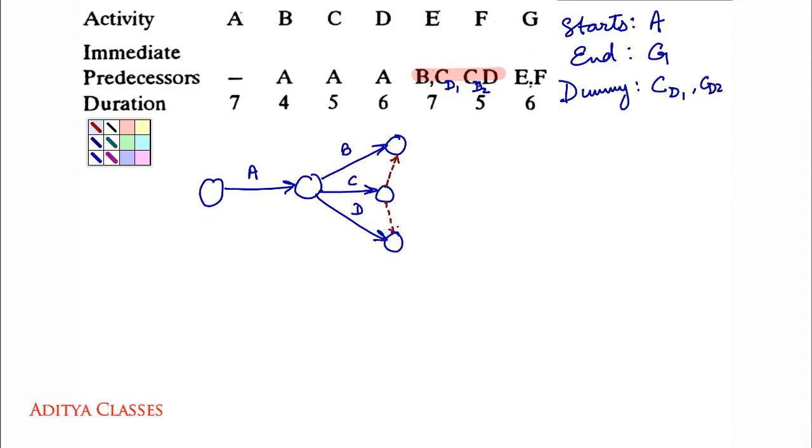Dummies are represented by dashed lines, dashed arrows. I am using a different color so that it stands out and it is visible. So what is this? It is dummy of C. This is also dummy of C. This is second dummy, this is first dummy.